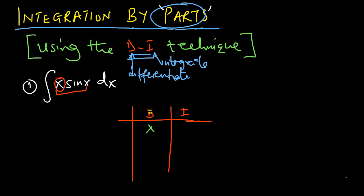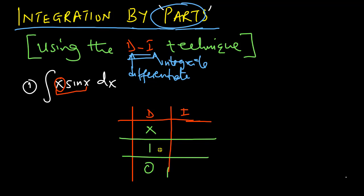I have X in the D column. If I differentiate X, I get 1. If I differentiate 1, I get 0 — so we stop there. Then I put sine X in the other column. If I integrate sine X, I get negative cosine X. If I integrate negative cosine X, I get negative sine X. Then we stop where we stopped for the D column.